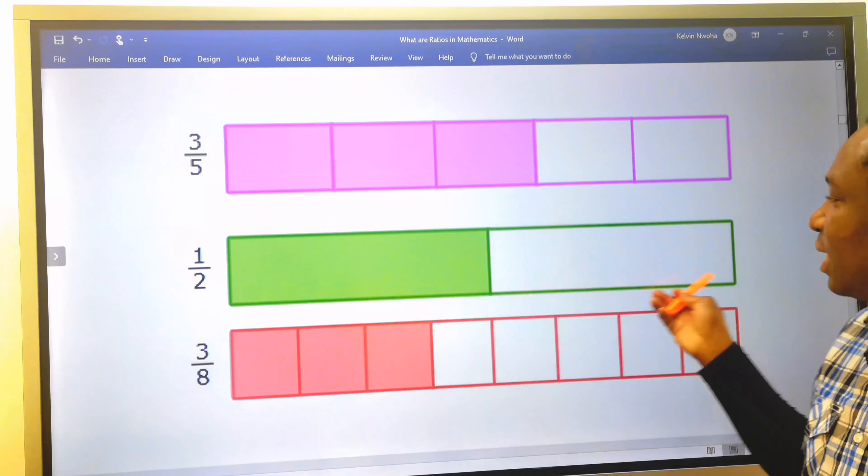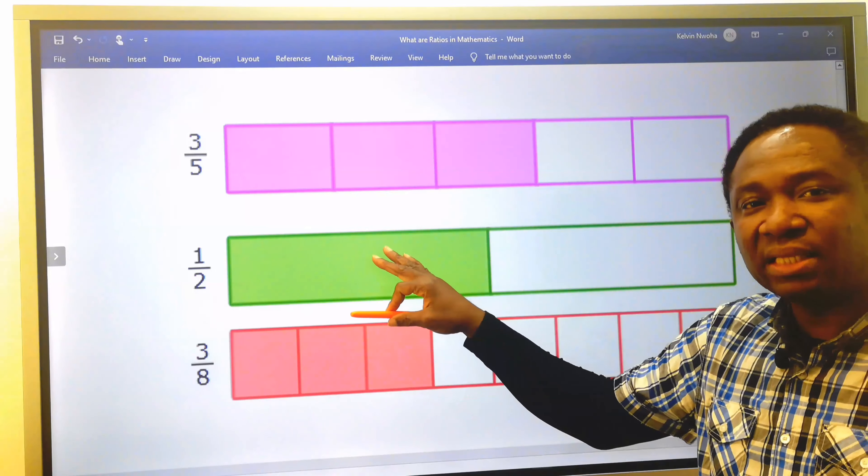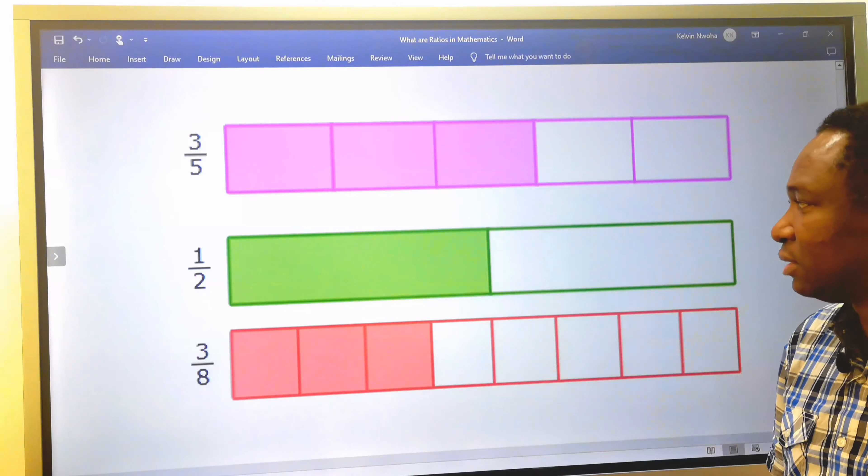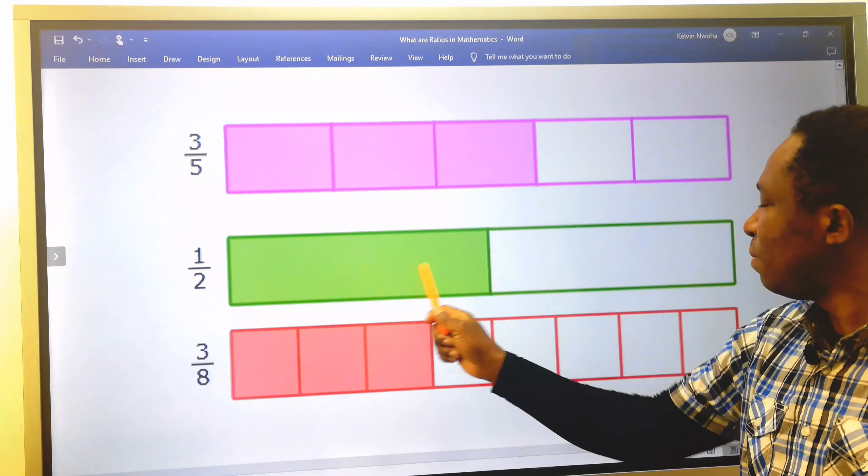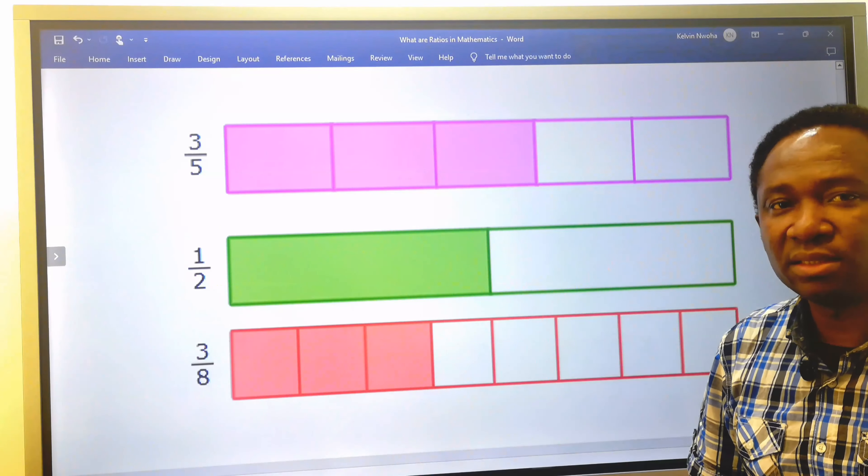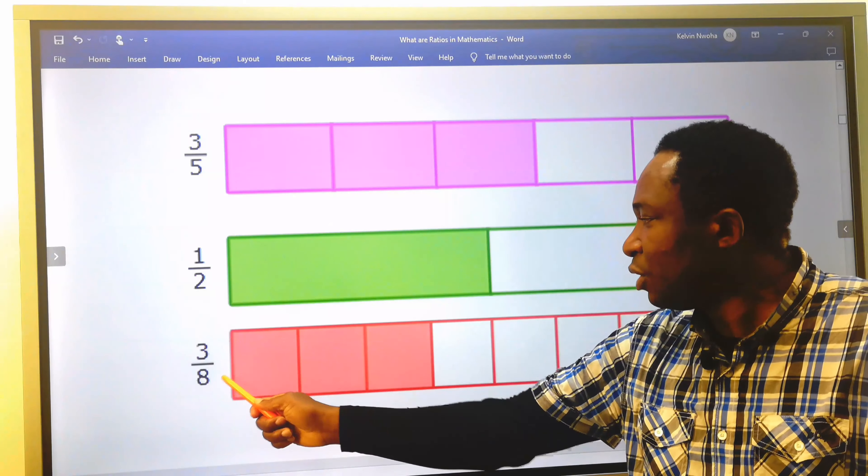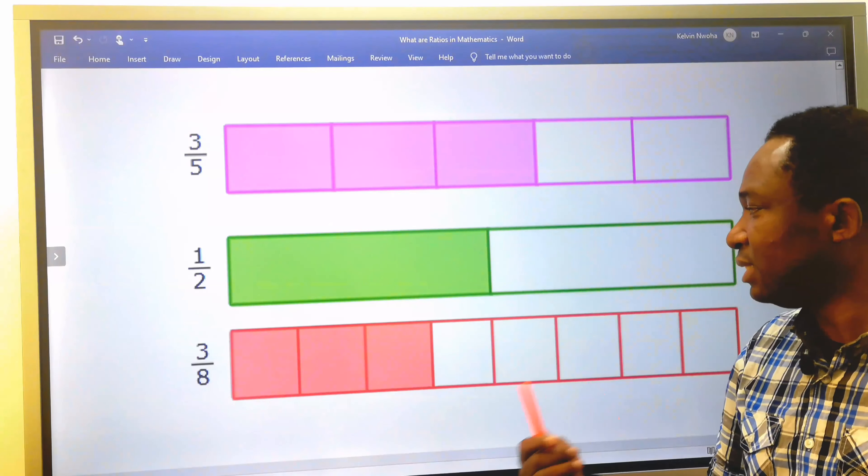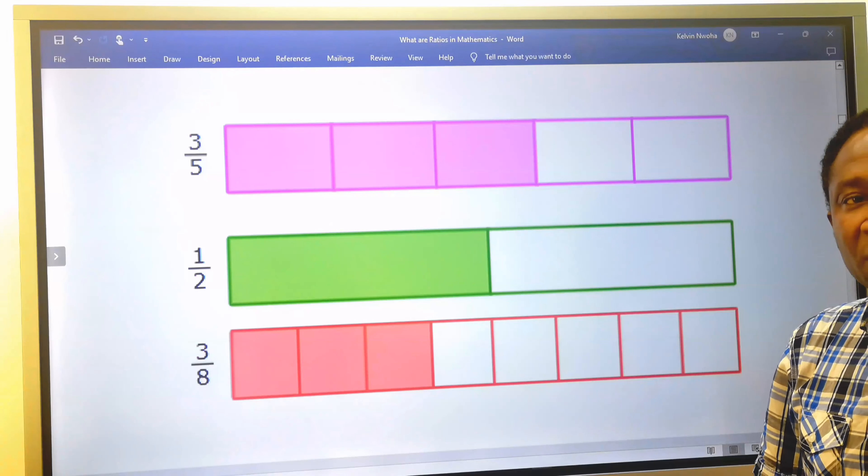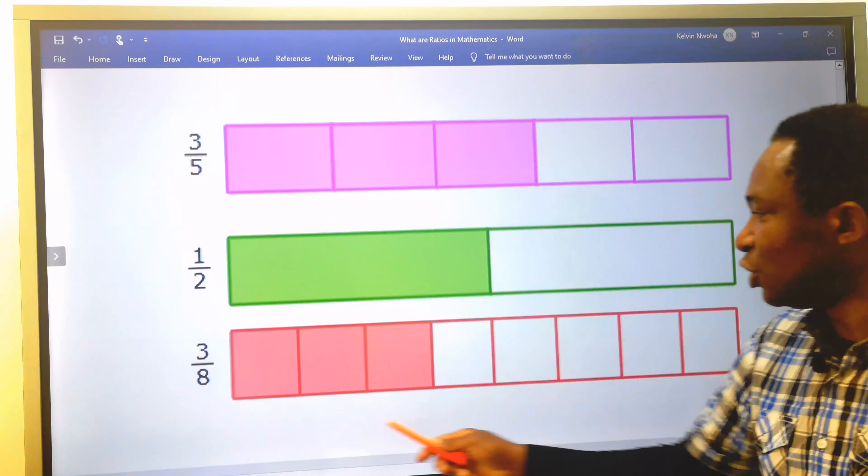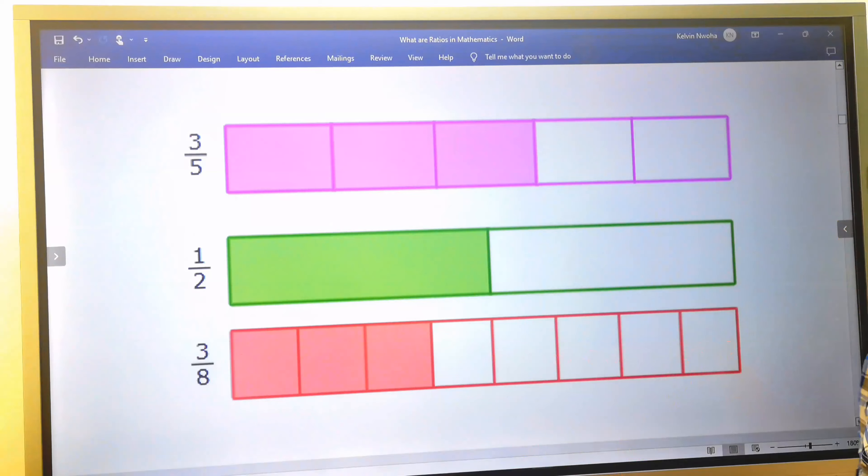For this rectangle which is split into two, one part is shaded. That means one part of these two parts is shaded. For this rectangle, three to the ratio of eight is indicating only the three shaded parts. We can also say five ratio eight to indicate the part that is not shaded.